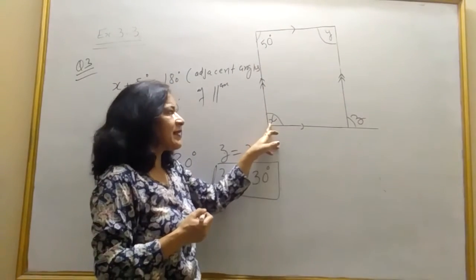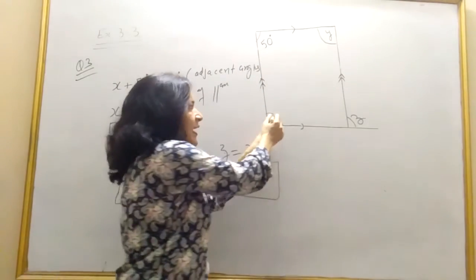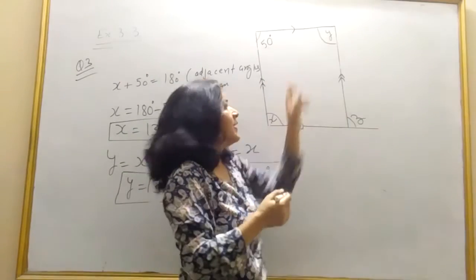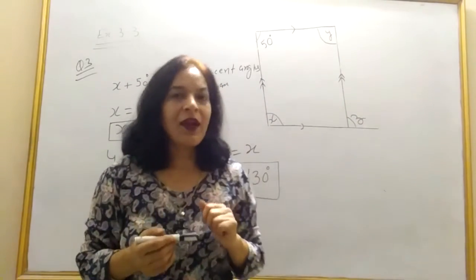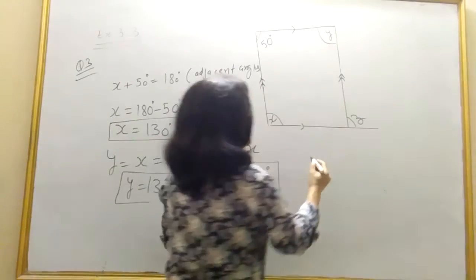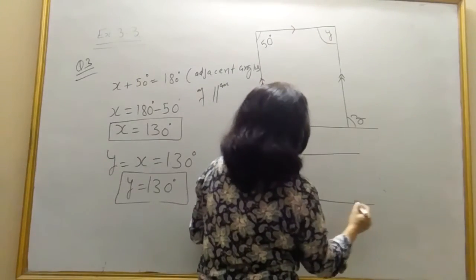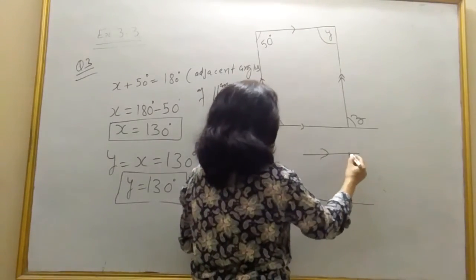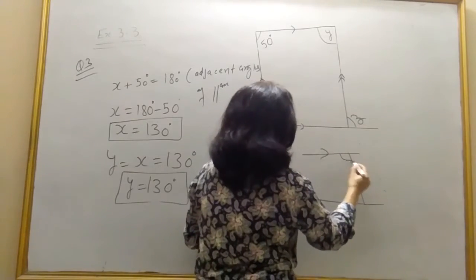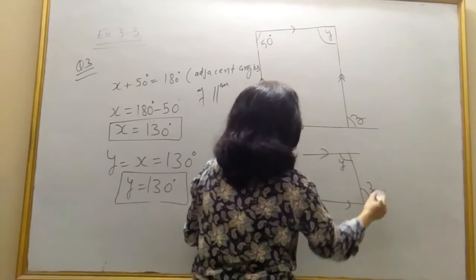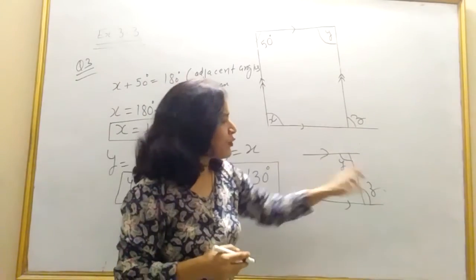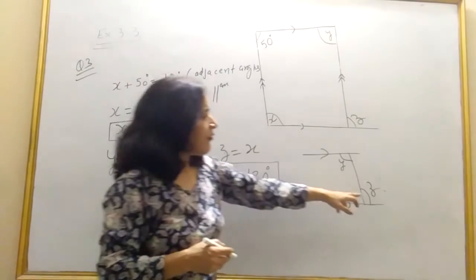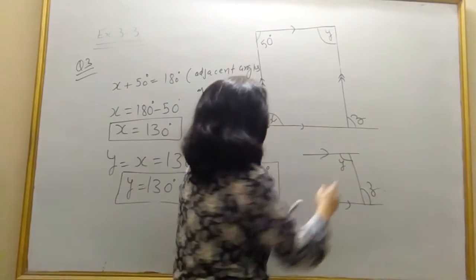50 plus x, adjacent angle we find x. Then x and y are equal. X and z are equal, corresponding. Or if I consider this parallel line, then y and z are also equal, alternate. Y and z are also equal, alternate angles.